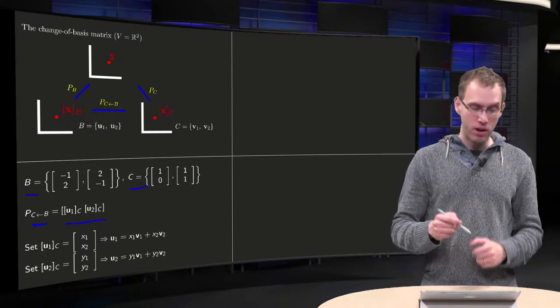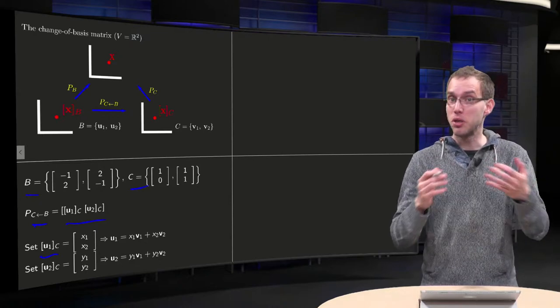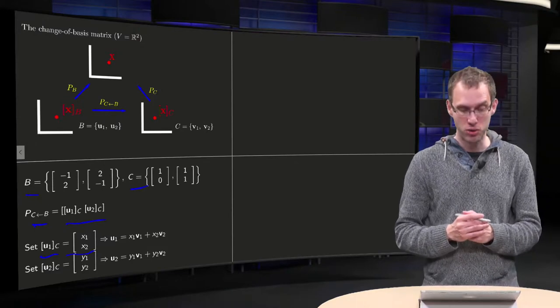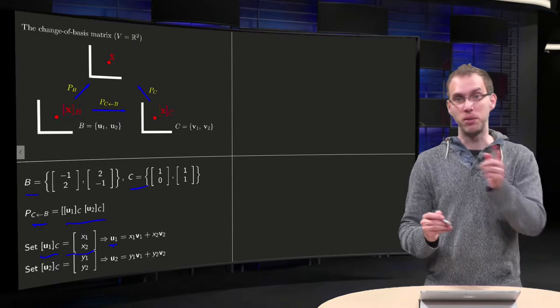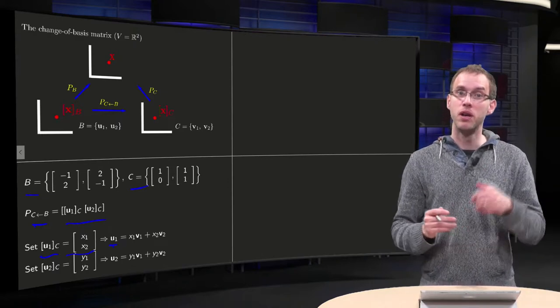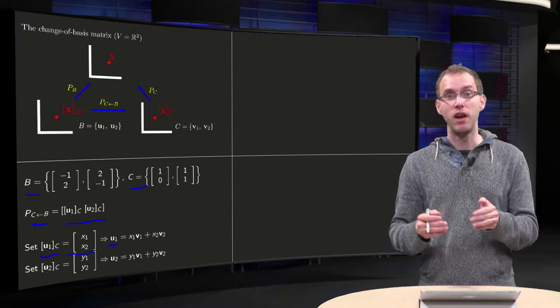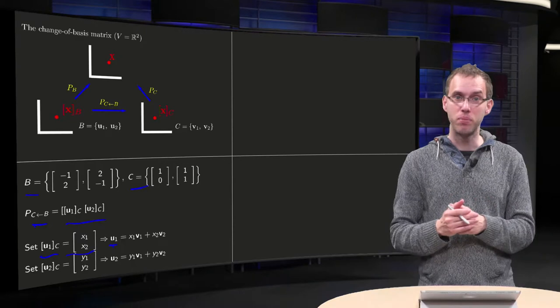We set u1 in the basis c. We need that one. It will be some vector in R2. So let's say it consists of weights x1 and x2. Then you know the vector u1 equals x1 times v1 plus x2 times v2. But you know v1 and v2, so here you have a vector equation. It's two unknown scalars. You know how to solve it. You can use an augmented matrix for that.